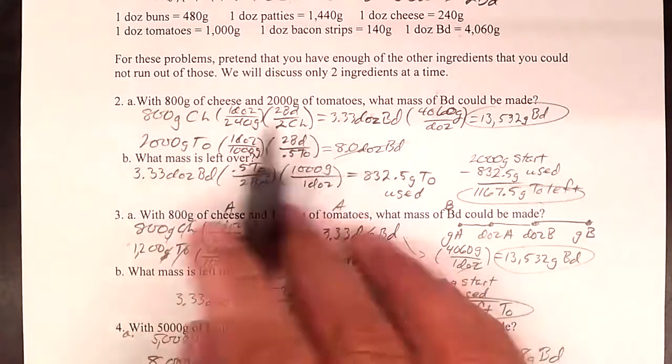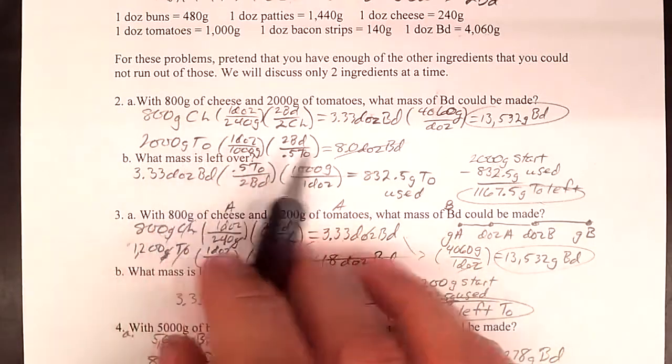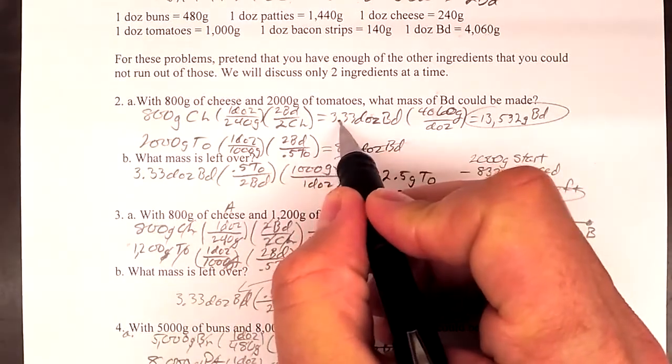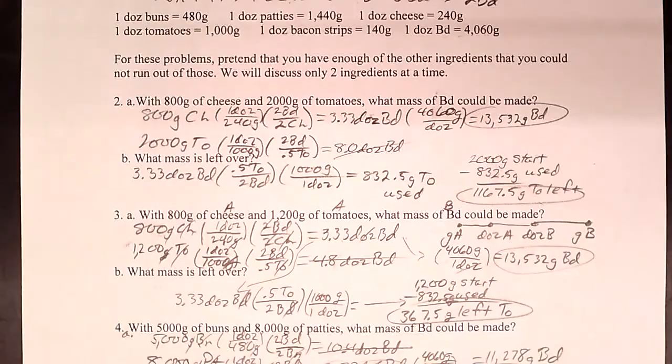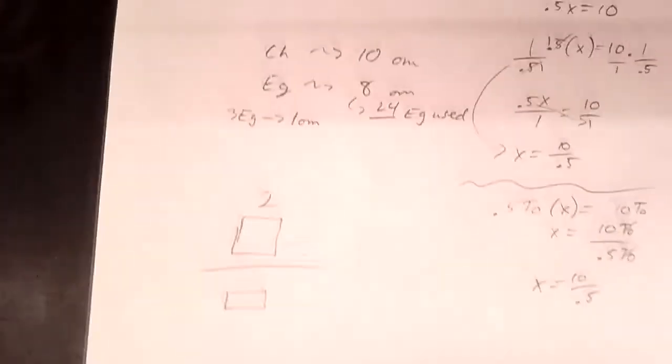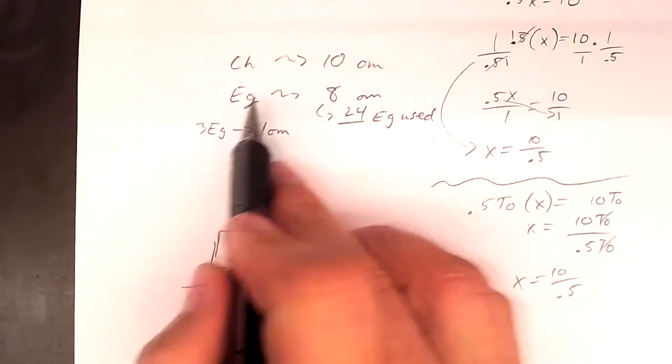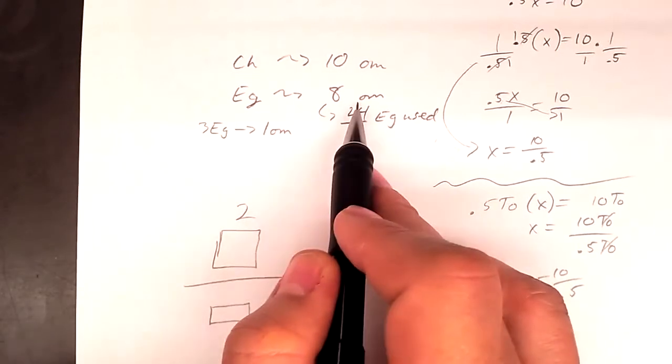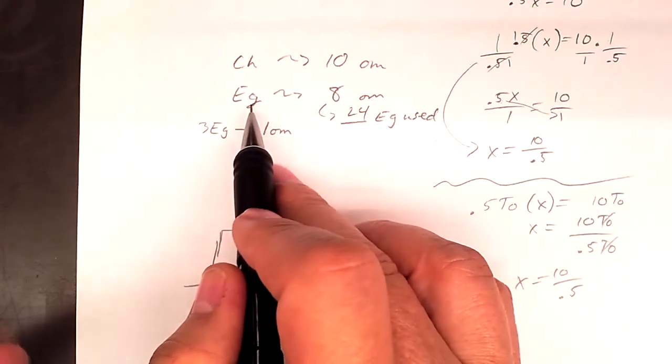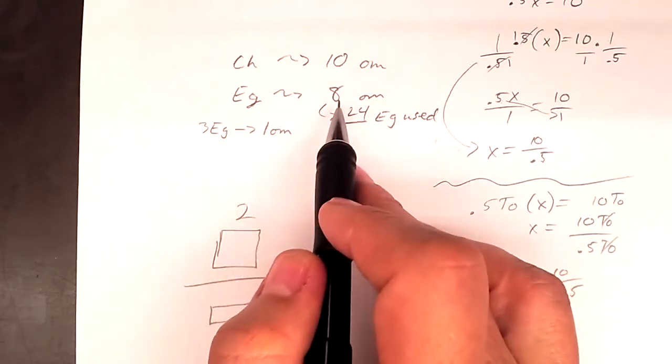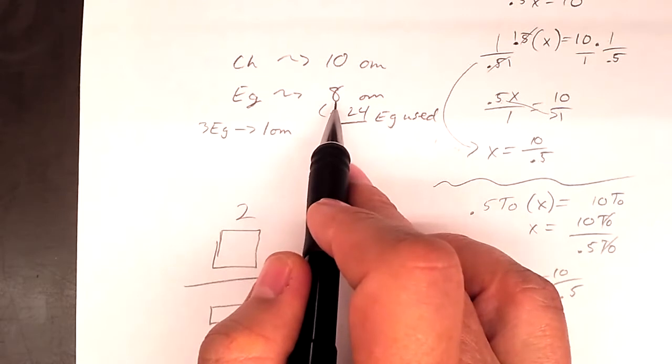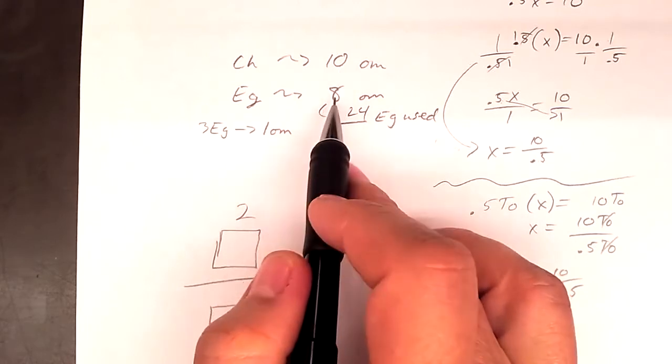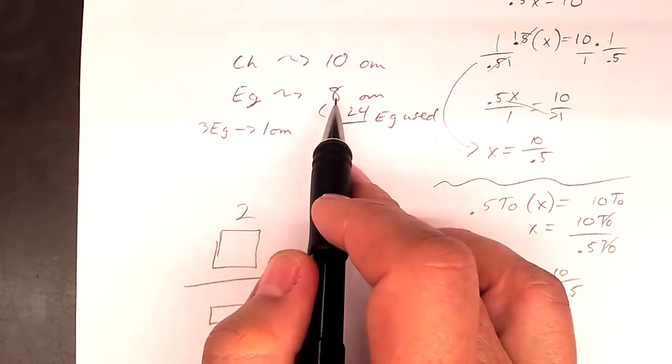We have limiting reactant. We can either make a certain amount with the cheese we've got, or we can make a certain amount of bacon double cheeseburgers with the tomatoes we've got, and it probably is not the same amount. As a concept, what if you had enough cheese to make 10 omelets, but enough eggs to make eight omelets? Well, you can only make the eight. When you made the eight omelets, you ran out of eggs. So you can never make the 10. The eight is possible. It's the smaller number that's possible always when you compare the two possibilities of products.